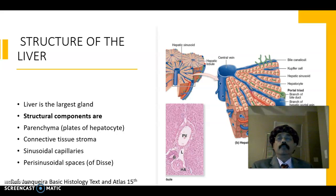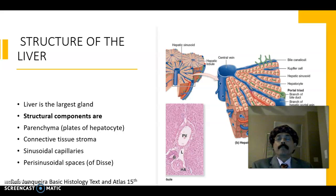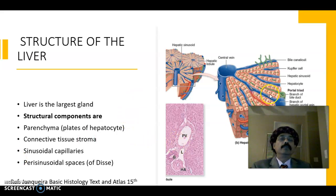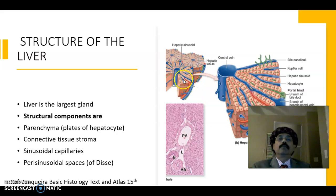Today I'll discuss the histology of the liver. The liver is the largest gland of our body. The structural components of the liver include the parenchyma, the plates of hepatocytes, connective tissue stroma, sinusoidal capillaries, and perisinusoidal spaces. Like any other gland, it has two components: the parenchyma, formed by hepatocytes, and the stroma, which is an extension of Glisson's capsule over the liver.